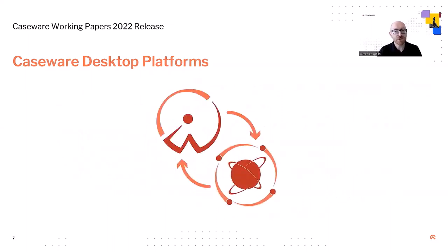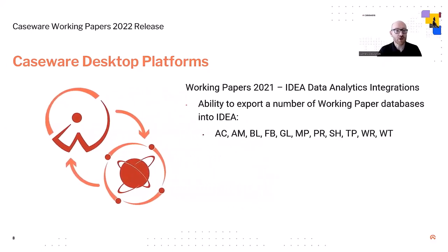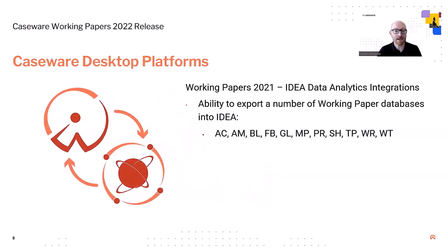Up until now Working Papers and IDEA have been used to complement each other but have always been separate platforms. To address this, with the Working Papers 2021 release we began integrating IDEA into the Working Papers workflow by providing the ability to export Working Papers databases into IDEA for analysis. This included trial balance details, journal entries, account mappings and balances, engagement properties, and document information. These databases could be exported directly into IDEA, with results passed back to the Working Papers engagement as text, Excel, or IDEA database files. However, there was no clear integrated workflow between the platforms and no clear path to the available data analytic functions and sampling methods that IDEA offers.